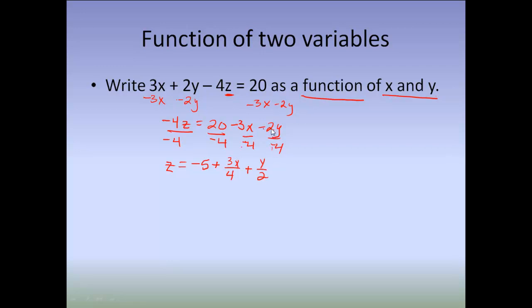These two negatives make a positive and then I can reduce the 2 over 4. So, that right now is my function solved for Z. But now, it wants me to write it as a function of X and Y. So, that means I have to now replace my Z with function notation.